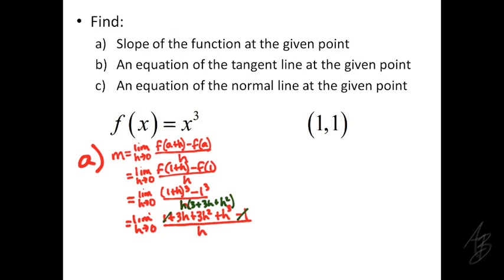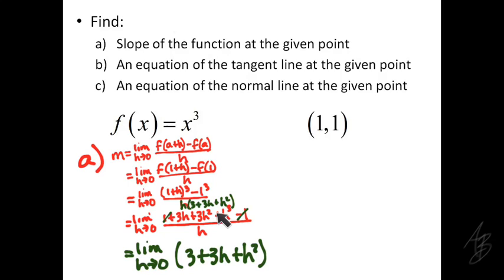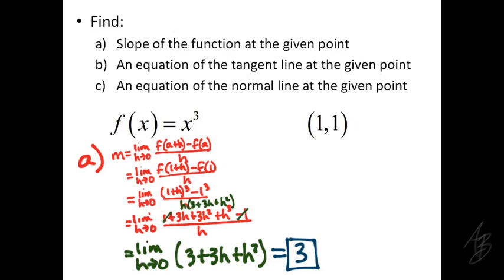Canceling the h's, we end up with the limit as h approaches 0 of 3 plus 3h plus h squared. We can use direct substitution now — we were not able to before because we would have gotten 0 over 0 — but after canceling h, which is not equal to 0, we can substitute. This limit equals 3 plus 0 plus 0, so the slope of the tangent line at (1, 1) is 3.